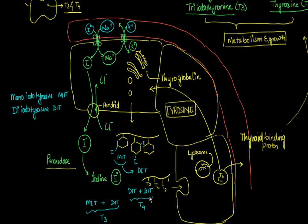By conjugation, one MIT combines with one DIT to form T3, and one DIT combines with another DIT to form T4. These T3 and T4 hormones are still on the thyroglobulin chain. The thyroglobulin chain is taken up by the principal cells via pinocytosis, lysosomes release T3 and T4, which travel into the blood vessel, combine with thyroid binding protein, and are carried to target tissues to carry out their function of metabolism and growth.